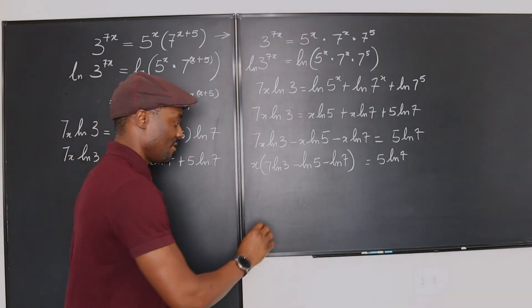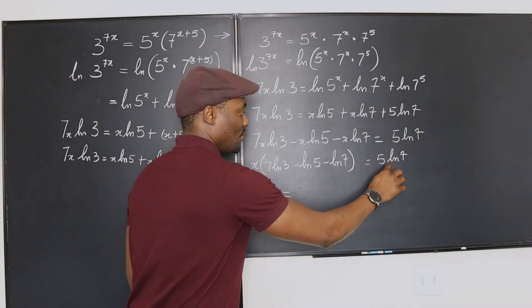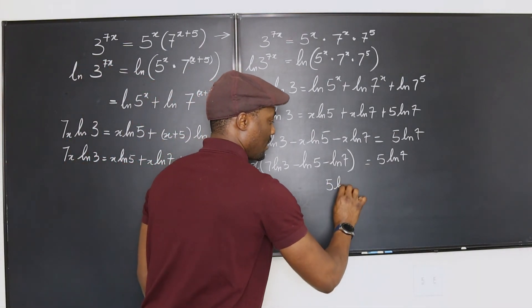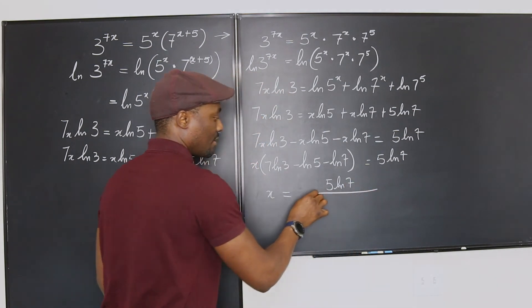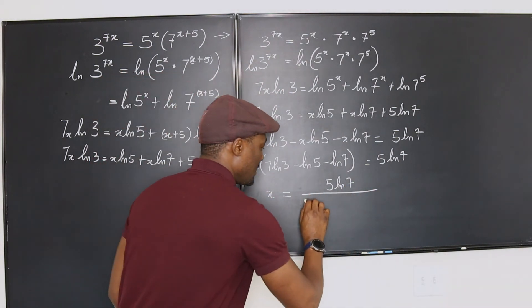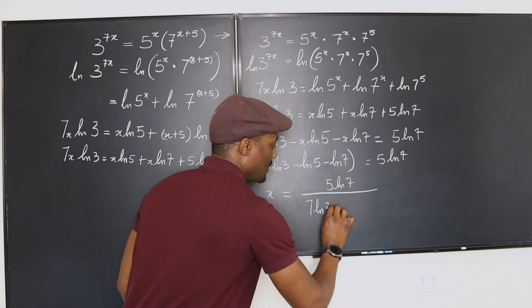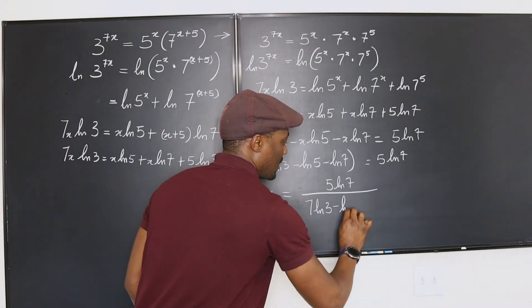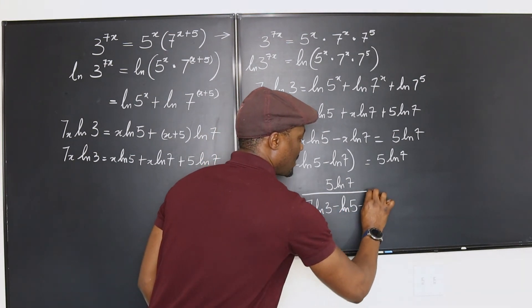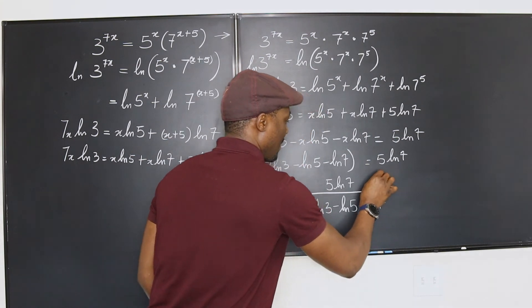So, final answer, x will be equal to 5 ln 7 divided by 7 ln 3 minus ln 5 minus ln 7.